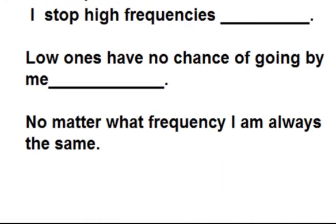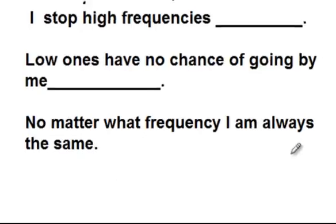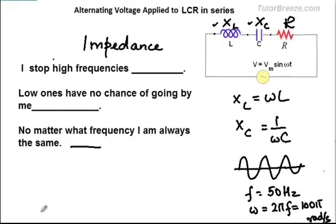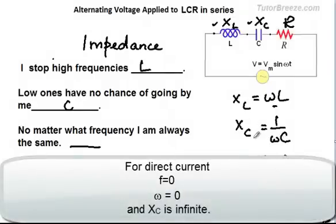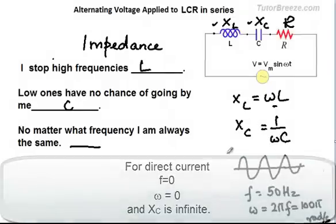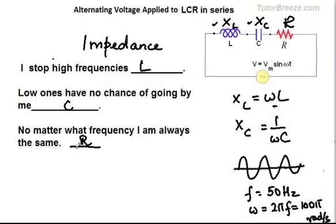Here is a small riddle: 'I stop high frequencies — what's my name? I have no chance of letting DC pass. No matter what frequency, I am always the same.' The answers: an inductor stops high frequencies, a capacitor stops low frequencies and blocks DC because when f equals 0, the capacitive reactance becomes infinite, and a resistor does not change regardless of the frequency of the source.